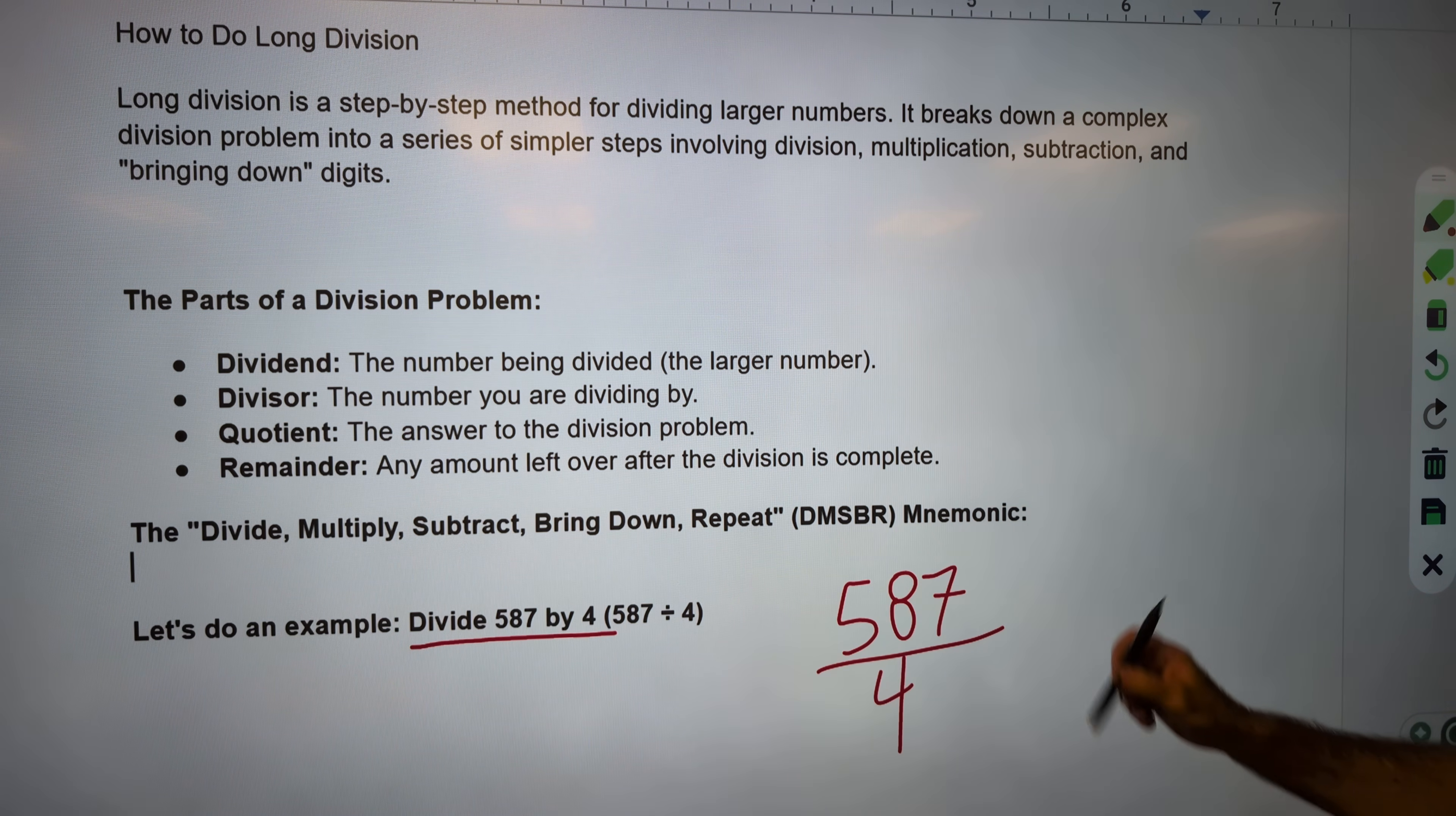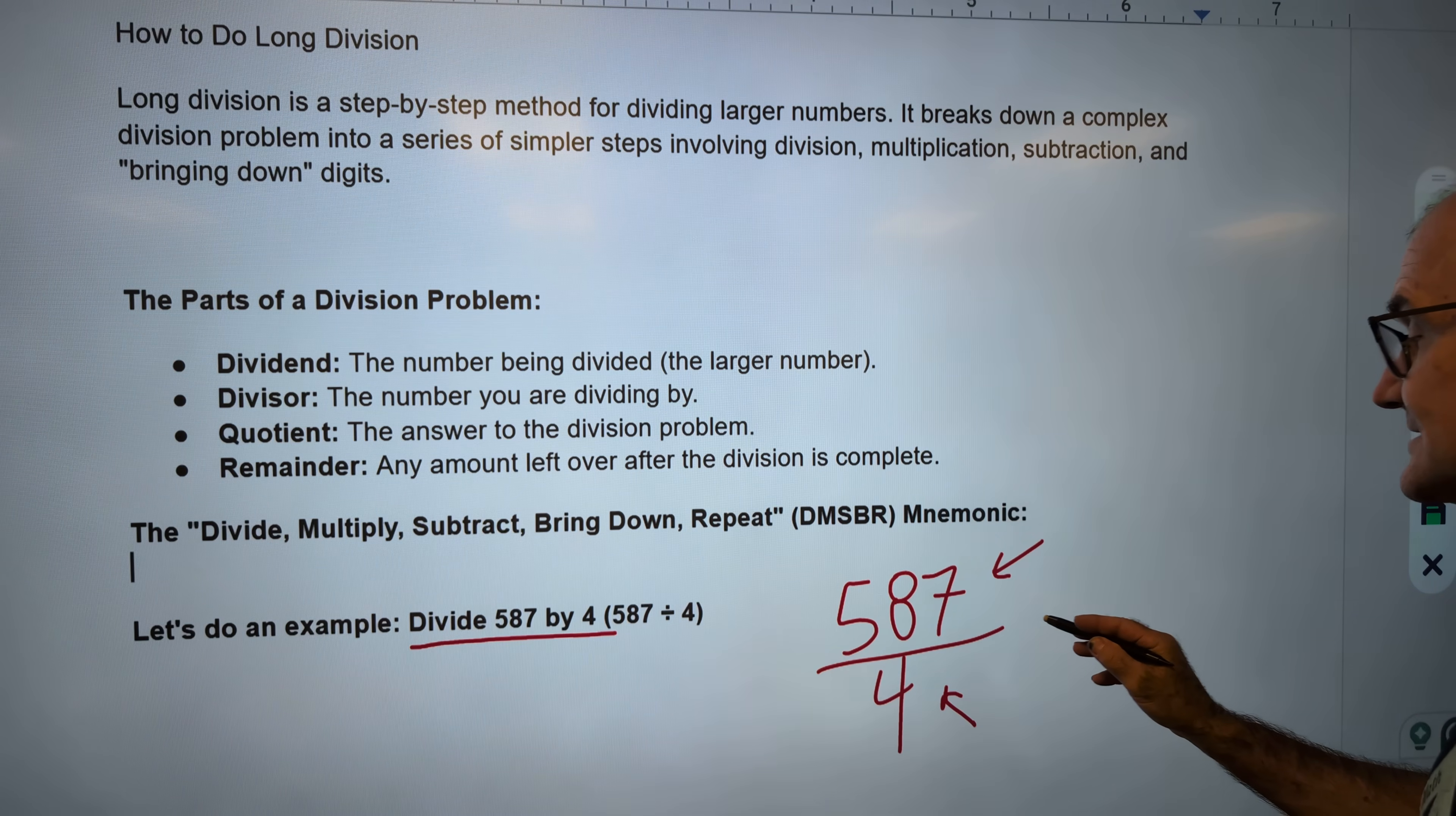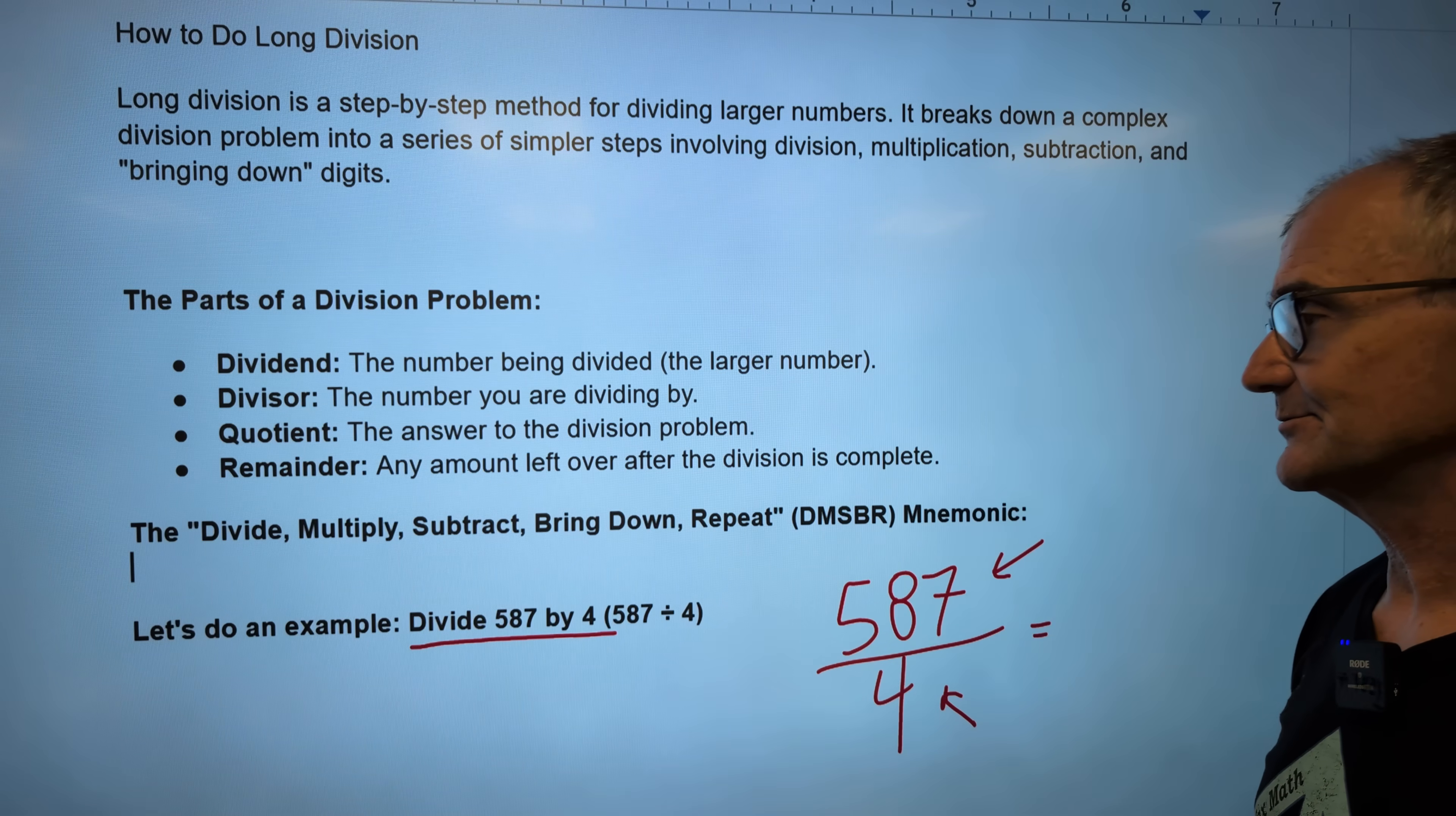This part right here is called the dividend. Kind of hard words to remember. So this numerator, the top of the fraction, is the dividend. This right here is the divisor - it is what you are dividing by. Your answer is the quotient. And then if there's a remainder, if it doesn't go in there evenly, that would be your remainder. We'll talk about a few different ways to find that remainder and what to do with it.